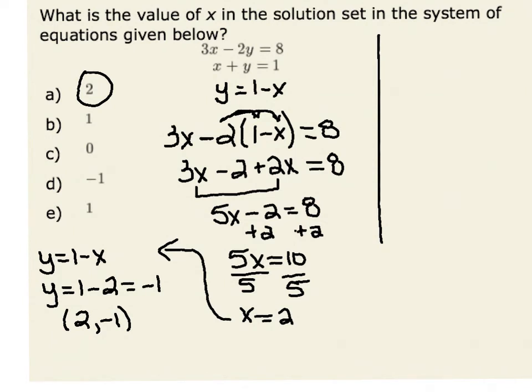I see that I have a negative 2y in one equation and a positive y in the other. Therefore, I want to make the coefficient on my y value to be such that when I add my two equations together, I eliminate my y values.